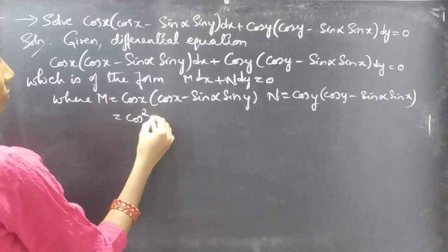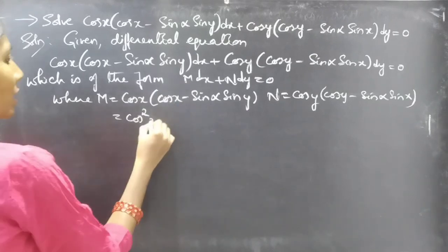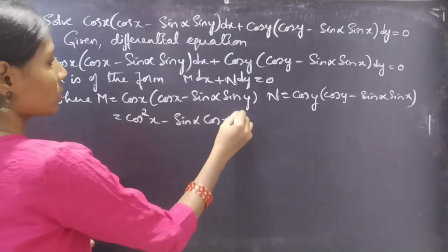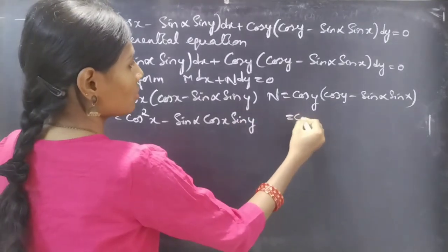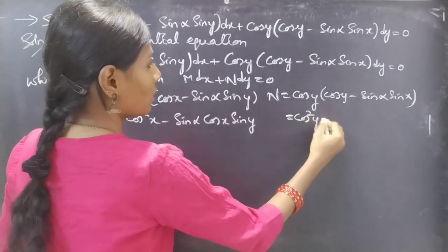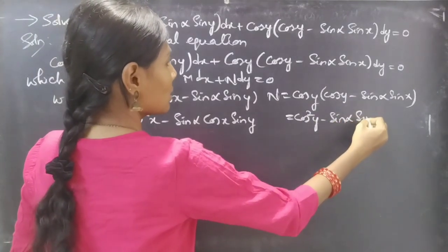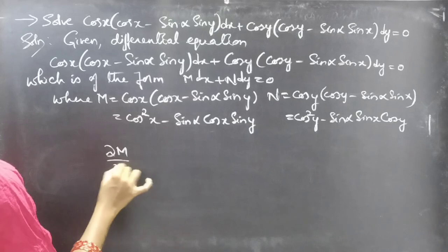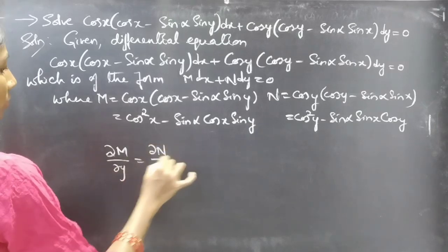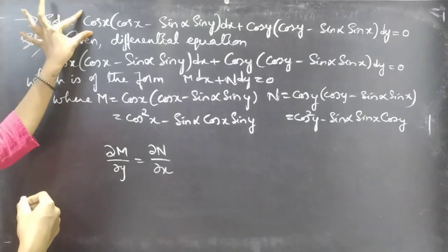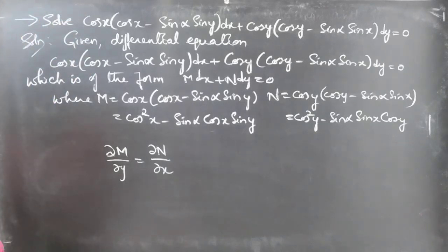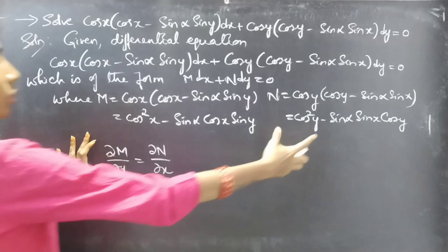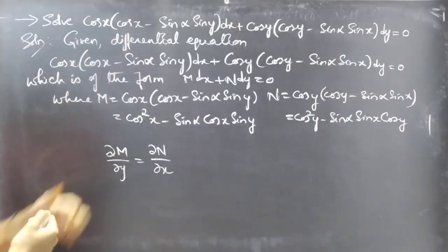M becomes cos²(x) - sin(α)cos(x)sin(y). If the partial derivative of M with respect to y equals the partial derivative of N with respect to x, we can say that the given differential equation is an exact equation.